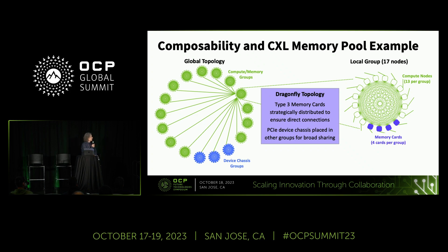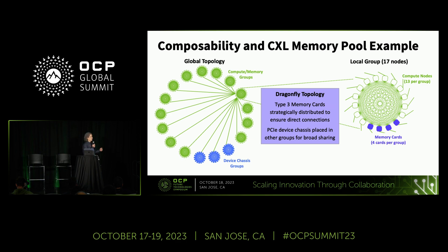Here's an example of a Dragonfly topology we're leveraging for composability at large scale. On the right-hand side, some of our links are used for small group topologies — very tight full meshes allowing many servers to connect directly to CXL memory chassis. At large scale, some links create global links toward device chassis. Latency-sensitive connections are all directly connected back-to-back, while less latency-sensitive connections can go very long distance at multi-row scale.